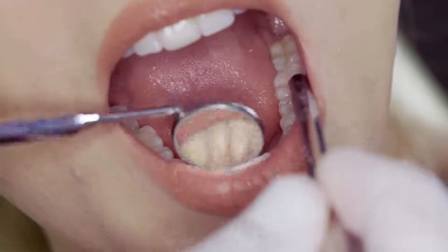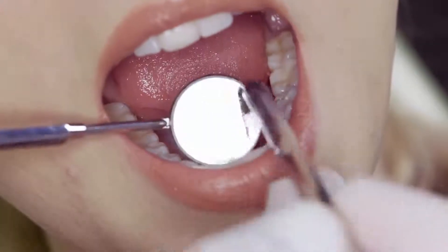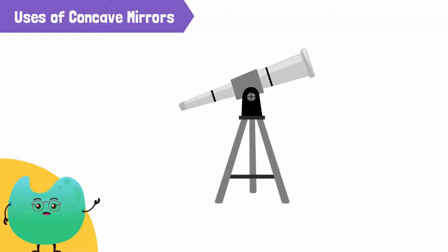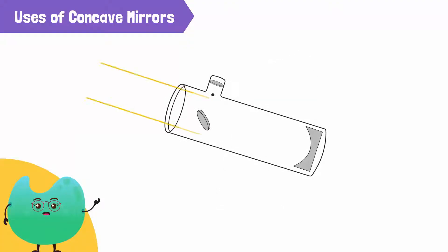Concave mirrors show bigger images, so they are used to see objects that are far away from us. In a telescope, for example, when light rays enter a telescope, they fall on the concave mirror. This concave mirror converges all the light on the focal point where the image is formed. A plane mirror is placed at this focal point, which directs the light towards the eyepiece.